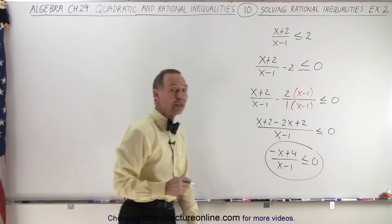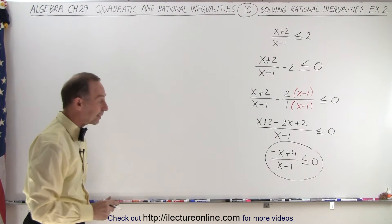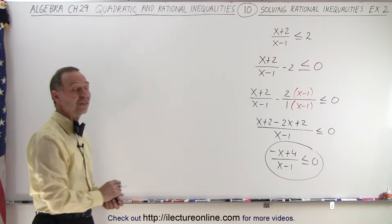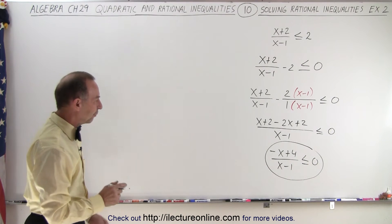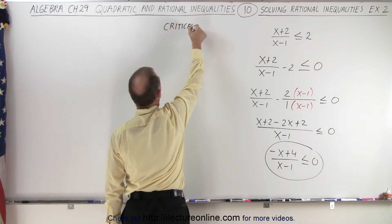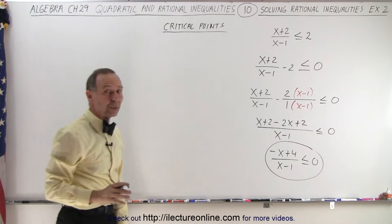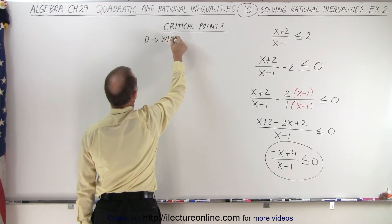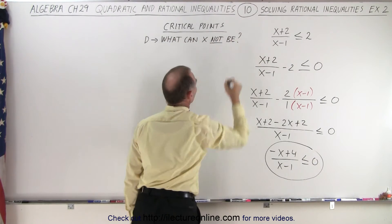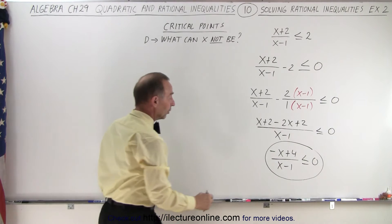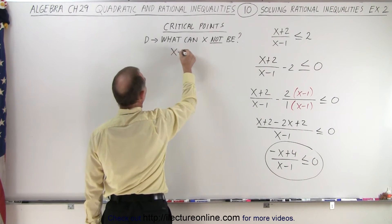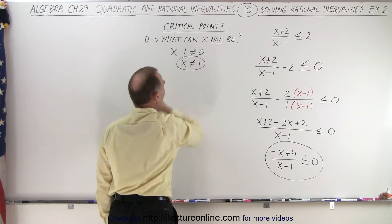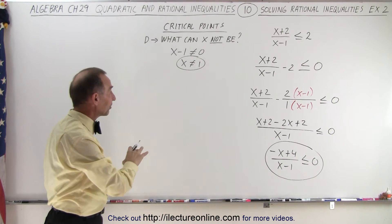So there is our inequality in the proper standard format. Now we can find the critical points. Let's look at the denominator to see what x cannot be. All values of x that make the denominator equal to zero are excluded. So x minus one cannot equal zero, therefore x cannot equal one. That's our first critical point.